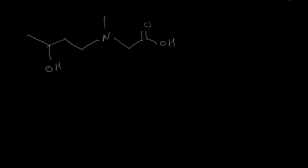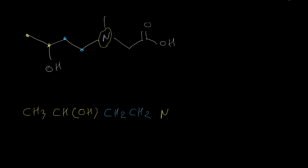Here is another structure. The first carbon is CH3. The second carbon is CH — it has three bonds — and this CH also has an OH. Then the next two carbons are both CH2, so we can write CH2 times 2. After that we have nitrogen, and this nitrogen has a CH3 attached. After nitrogen we have another CH2, and at the end we have CO2H written in this form.